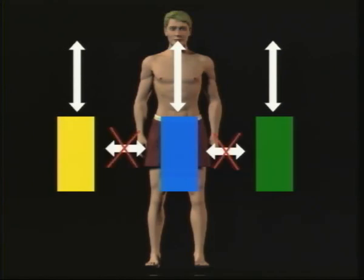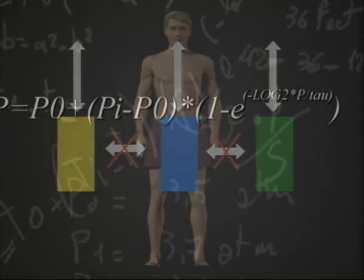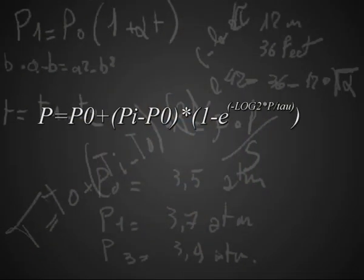Second, no interaction is considered between one compartment and another. It was thus possible to calculate the tissue tension of each compartment during the descent and ascent phases, calculating the elimination of excess gas.